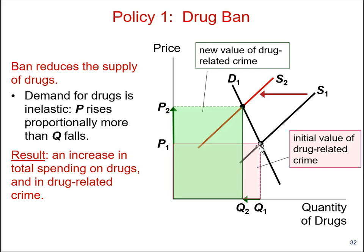The original equilibrium price in the market is at quantity Q1 and price P1. The pinkish area represents total spending before the drug ban is enforced — that is P1 times Q1, the total revenue for the suppliers. After the ban, the supply shifts left: quantity supplied decreases at all prices, so there is a parallel shift of the original supply line to the new red line.